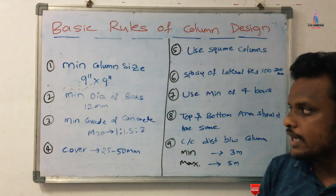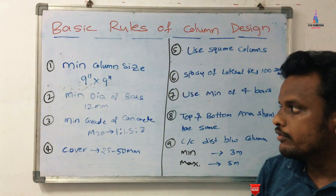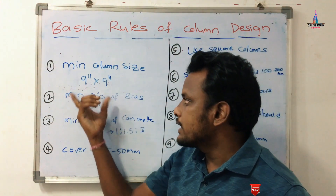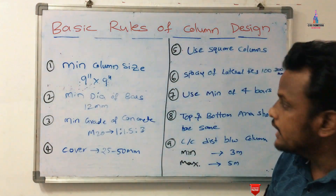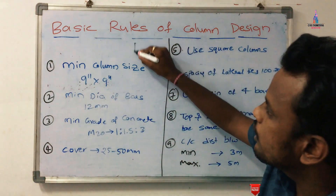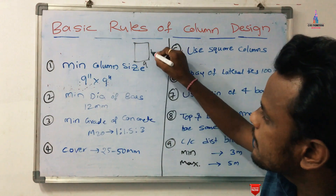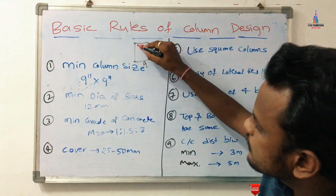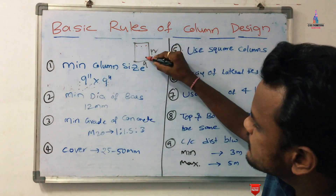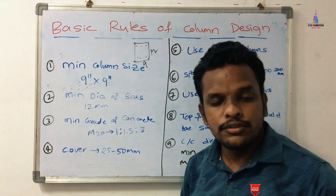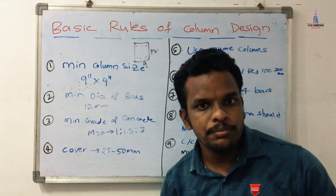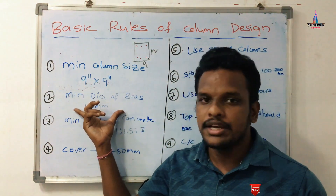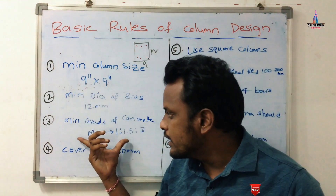The second rule: the minimum diameter of the bar should be 12 mm. This is the minimum diameter for that section. For example, consider a column of 12 inches cross 9 inches — if you observe three bars at the top reinforcement section and three bars at the bottom reinforcement section, the diameter should be a minimum of 12 mm.